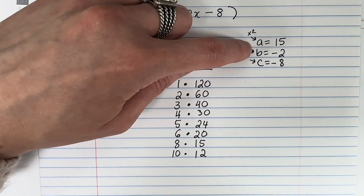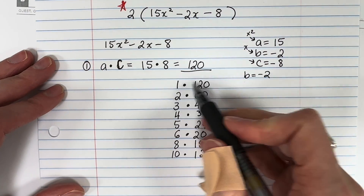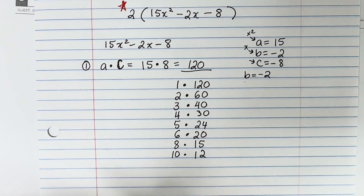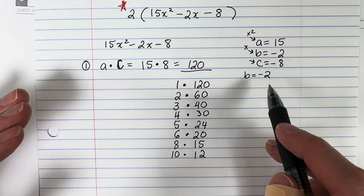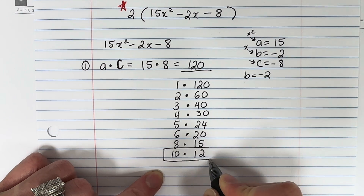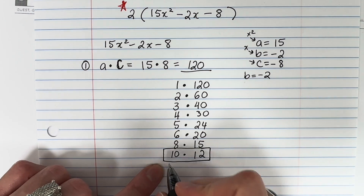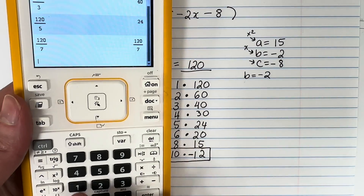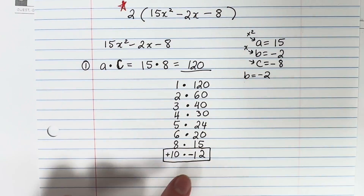Now I look at B, which is negative 2. Which pair, if I add or subtract, gives me negative 2? The only pair that gives 2 is 10 and 12 — 12 minus 10 is 2. So to get negative 2, I need positive 10 and negative 12: 10 minus 12 is negative 2. That's the pair I'll use.